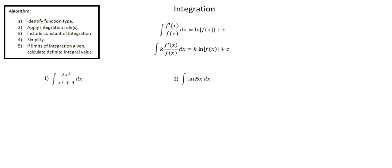Let's look at problem one: the integral of 2x squared over x to the power of 3 plus 4 with respect to x. Going to our algorithm, step one — identify function type. We need to identify that the numerator relates to, though not exactly, the derivative of the denominator. So the function type here is generally a derivative of a function over its original function.